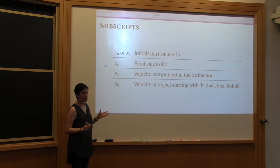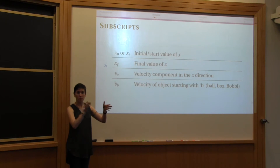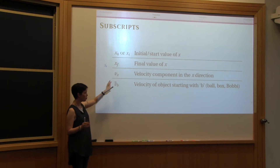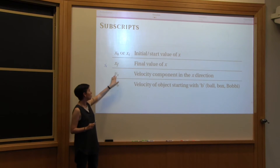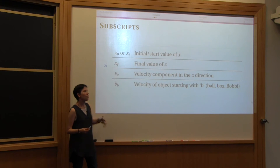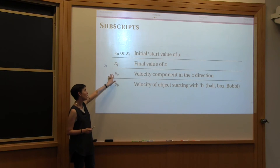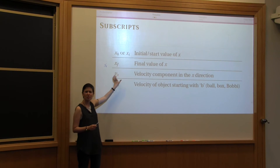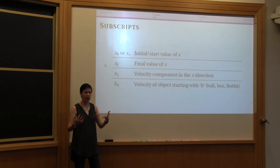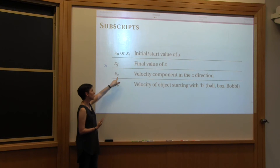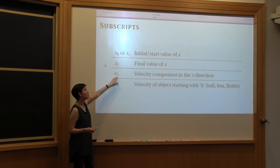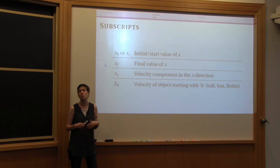The second thing we use subscripts for — rather than just denoting the initial value, the final value, or numbering multiple values in between — is to denote directions, specifically component directions. So you see here I've written v with subscript x, and this means the component of the velocity in the x direction. Note that there isn't a vector symbol here, so this in itself is a scalar. By writing the x, I've told you what the direction is. That subscript of x could also be y to imply it's in the y direction.